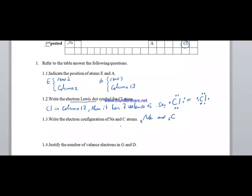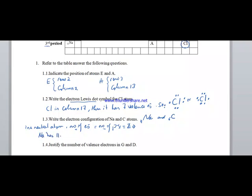Write the electron configuration of sodium and carbon. For a neutral atom, the number of electrons equals the number of protons, which equals the atomic number Z. Sodium has atomic number 11, so its electron configuration is K2 L8 M1. Carbon has atomic number 6, so its electron configuration is K2 L4.